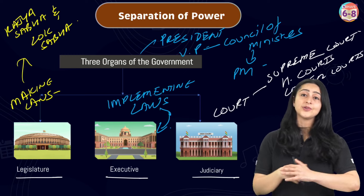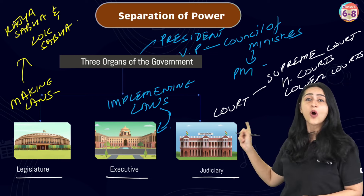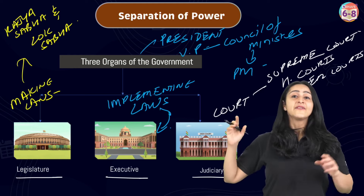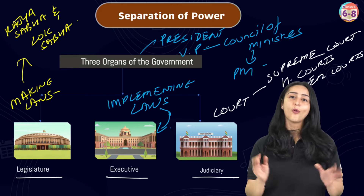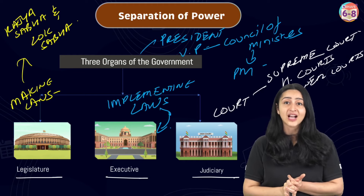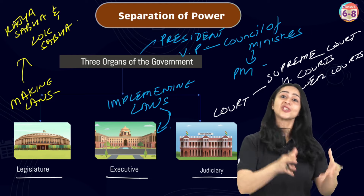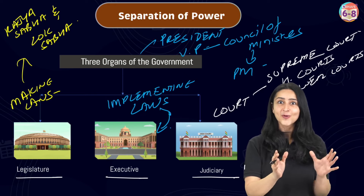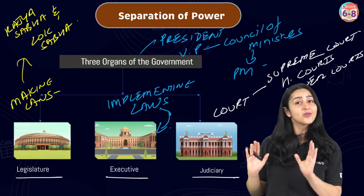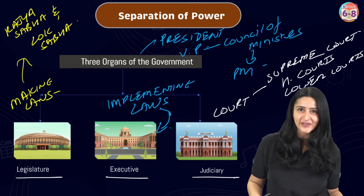A very important point to note is that the Constitution of India states that each of these organs — the legislature, executive, and judiciary — should exercise different powers in order to prevent misuse of power by any one branch of the government. Each of these organs acts as a check on the other, ensuring the balance of power so that no one organ is more powerful than the other. This was the third feature.